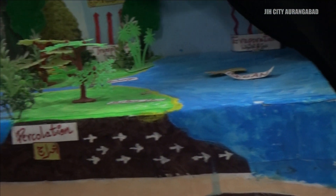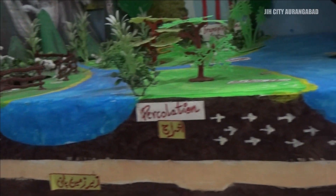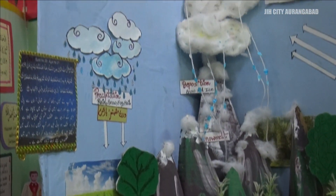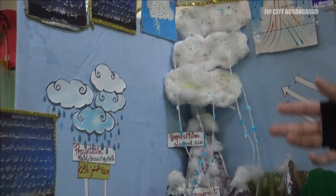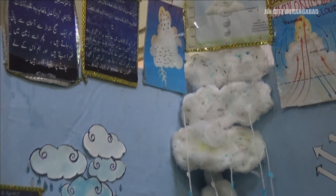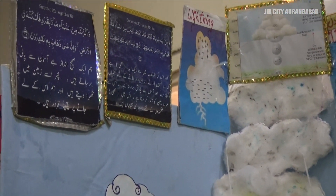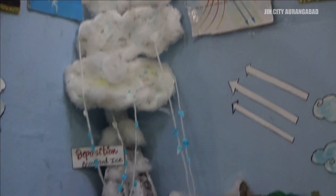The process of deposition is made in the process of snowfall and rainfall. The process of precipitation is made in the process of infiltration. The water is already in the soil.